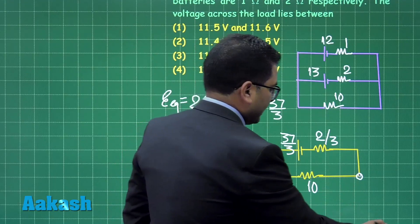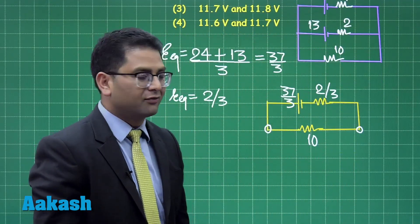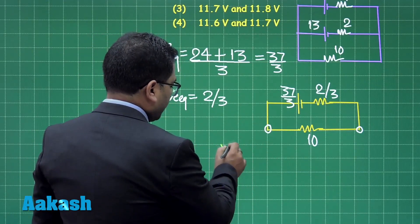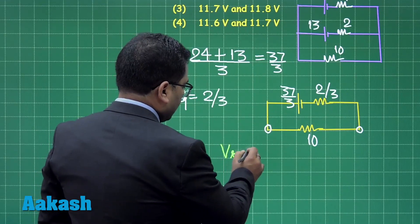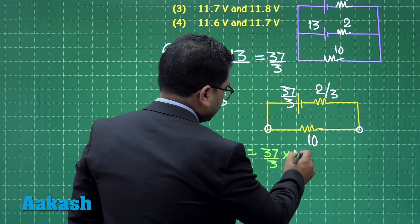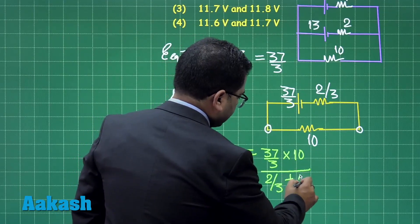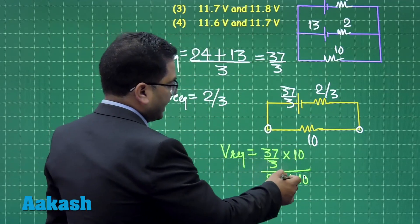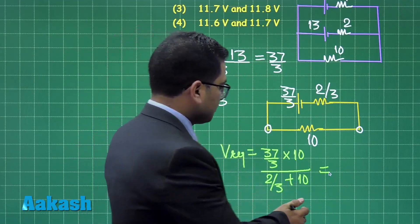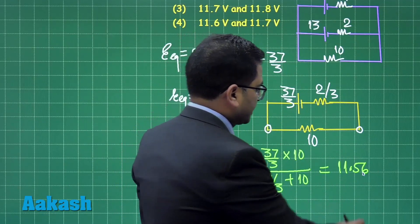Now the question demands the potential difference across this point and this point, and does it require any big skills? I don't think so, it's a straightforward one. So the value of the potential difference across that, the V required, is going to be 37 by 3 multiplied by 10 upon 2 by 3 plus 10. That's straightforward, and you know I had calculated it before recording, else even it's a very small and a simple calculation.